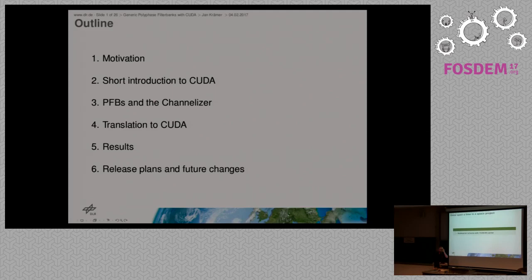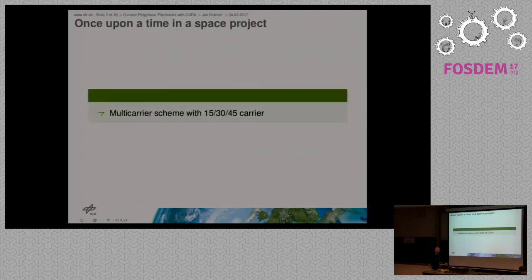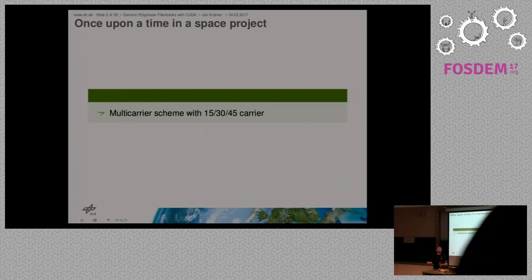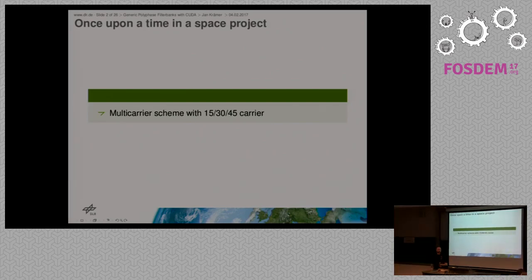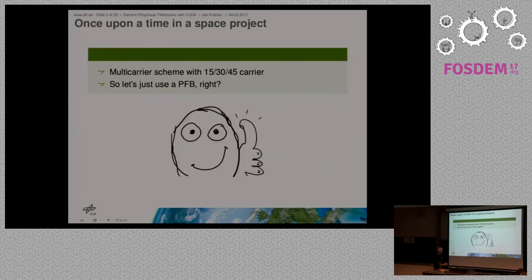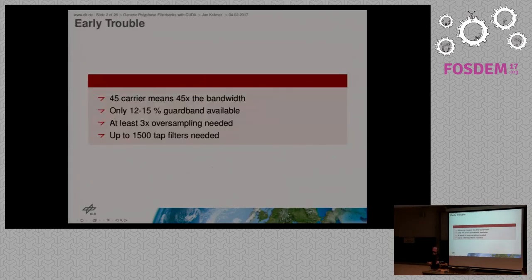Motivation: once upon a time there was a space project I'd been working on — a multi-frequency random access scheme. We had several numbers of carriers; in this project it was 15, 30, or 45 carriers, and on the receiving end we have to separate them somehow. I remembered a talk about doing the PFB thing that sounded cool, so I did some calculations. If you have 45 carriers, the problem is if you have all of them at once you have like 45 times the bandwidth.